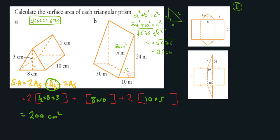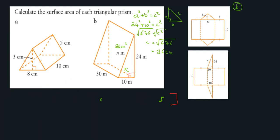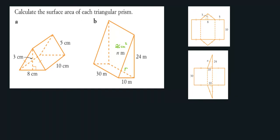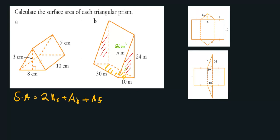You can use the nets to help you here. So for surface area of prism B, we have two triangles — let's call these the area of the sides, which are congruent — plus the area of the base and the area of the front faces.